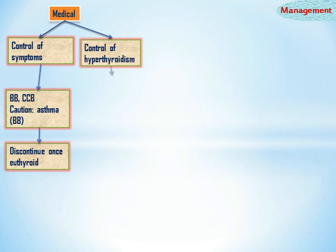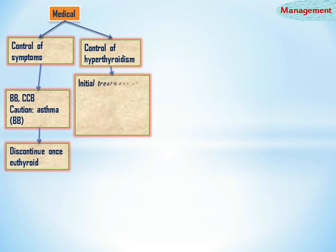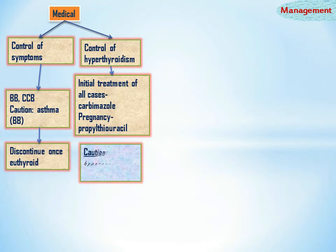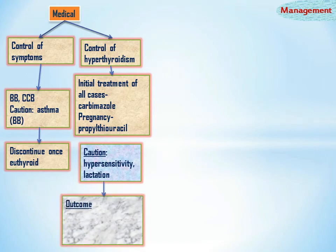For control of hyperthyroidism, initial treatment is carbamazole, started at 15 to 20 mg for the initial three weeks. In pregnant patients, the drug of choice is propylthiouracil at 100 to 150 mg every 8 hours. Propylthiouracil is contraindicated in cases of hypersensitivity and in lactating patients; carbamazole is indicated for lactating mothers. Remission is seen in about 50% of cases after 6 to 18 months of treatment.